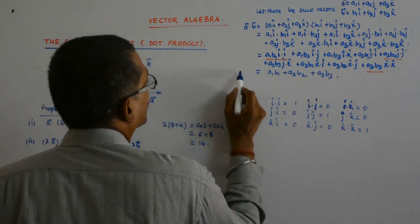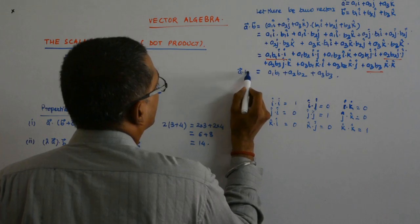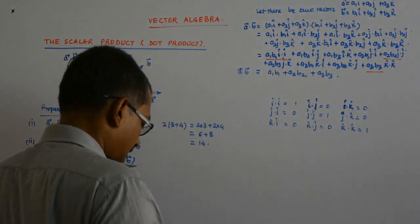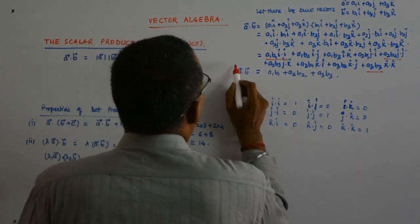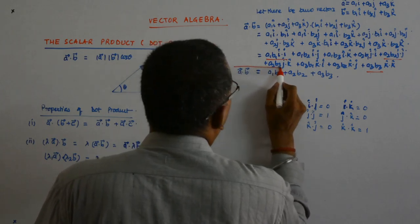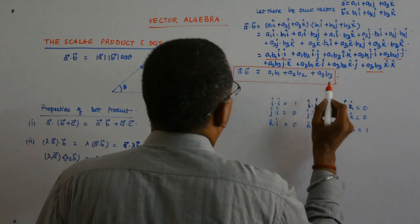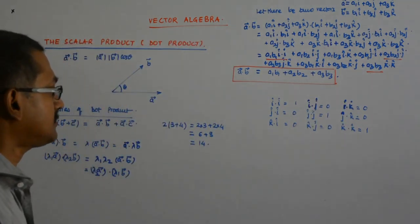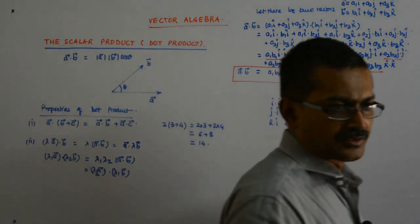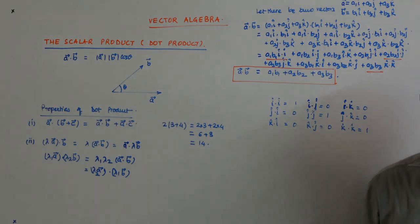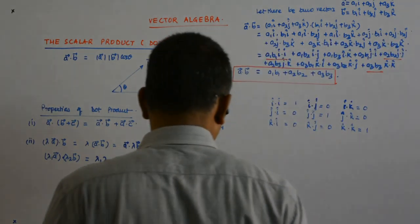Now, that's a very simple kind of thing to understand. What happens is this? You just have to multiply the corresponding i coefficients, j coefficients and k coefficients and just add them. It's as simple as that.